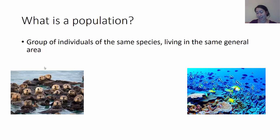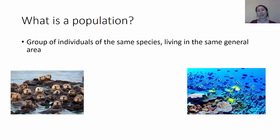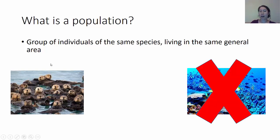In contrast, the coral reef has lots of different species of fish — I can tell because there are different patterns on them — and different types of coral. So this is what we would call a community: lots of different species living together. That's Chapter 54, but in Chapter 53 we're just talking about groups of a single species.